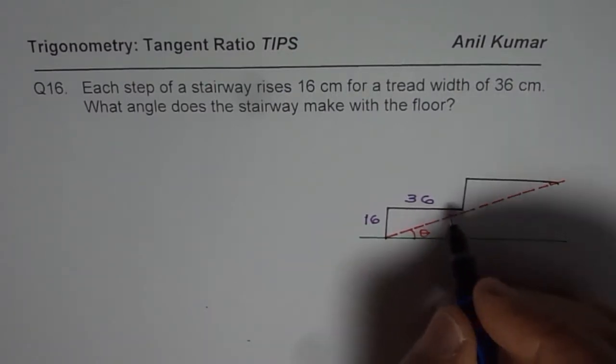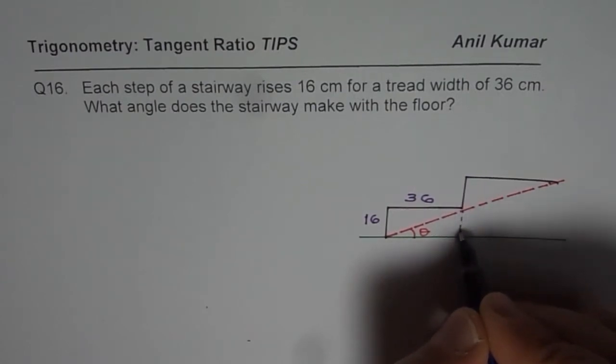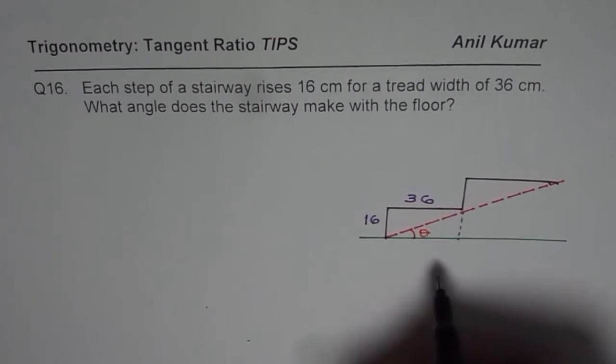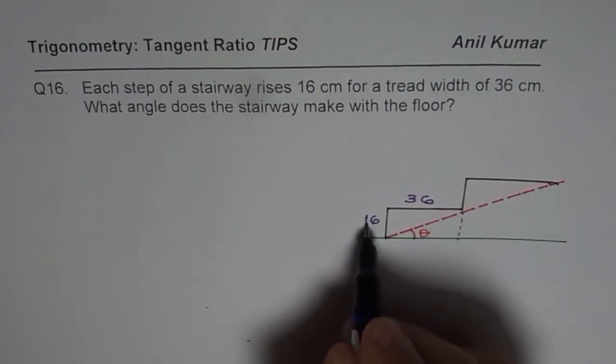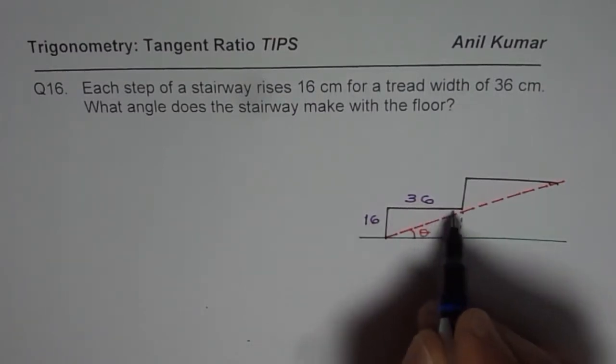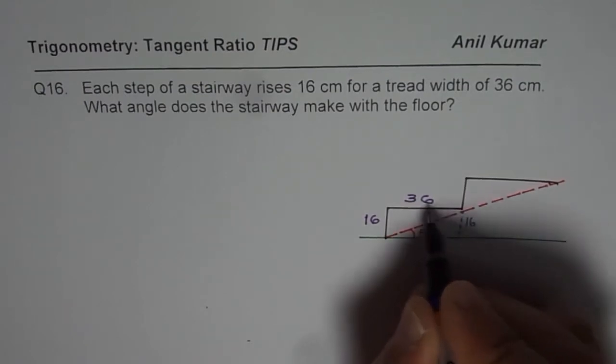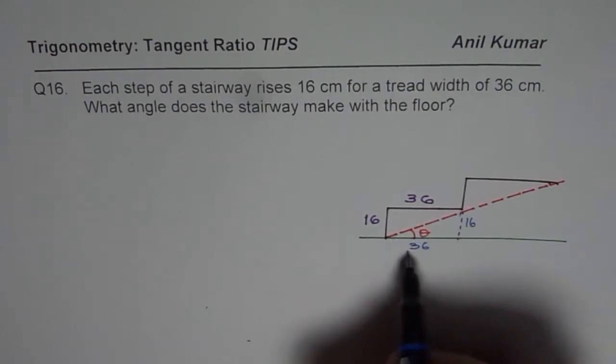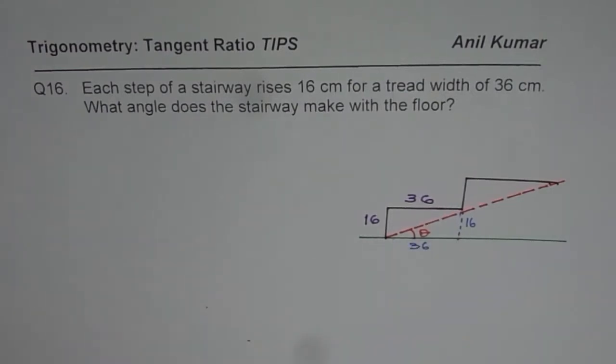Now what we can do in this case is we can do a small bit of construction. So if I drop, continue, extend this line, in that case 16, it forms a rectangle. So this side is 16 and then this side is 36. So we have a triangle here and this triangle can be solved to find the angle theta.